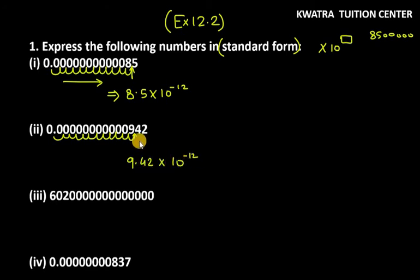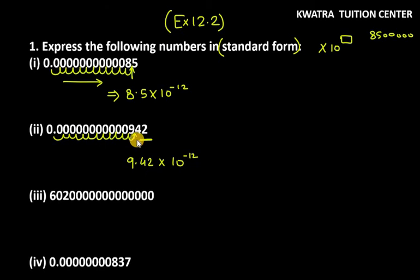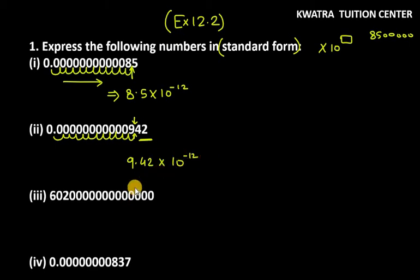Remember to write 4 and 2 — because some students only write 9 into 10 raised to power minus 12, which is not the same number. You missed 4, 2. The way to write it is: take the point after the first digit — 9 — then write all the remaining digits exactly after it, and then write the power of 10. This is your answer for the second one.